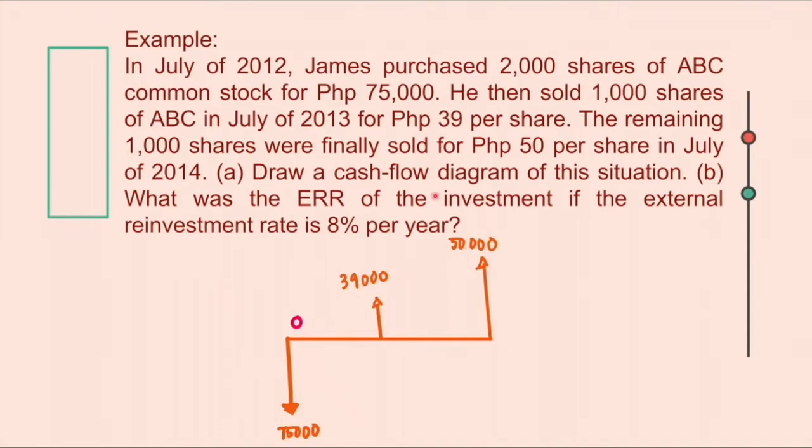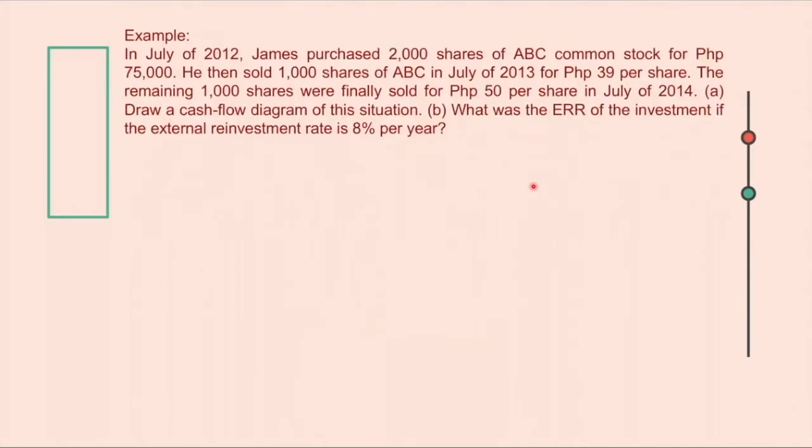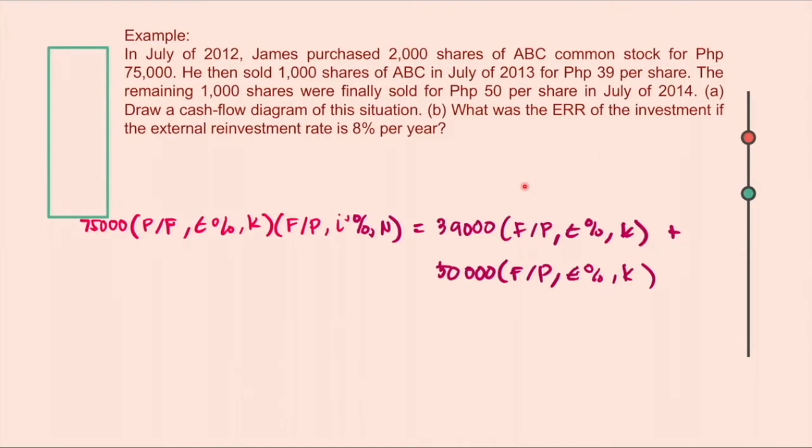Now for letter B, let's find the ERR. So this is the solution. The $75,000 is the cost. So we have to project this into the present time. But since it is already on the year zero, so the $75,000 will remain.